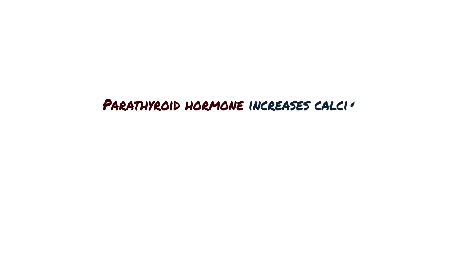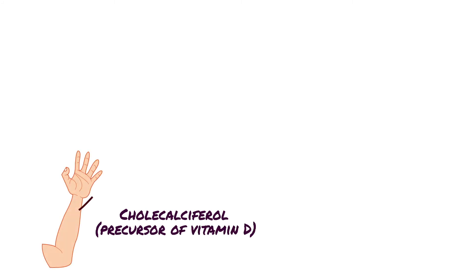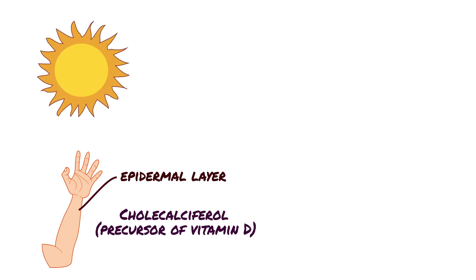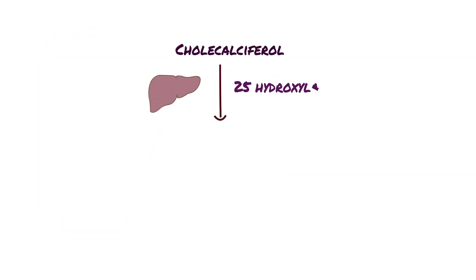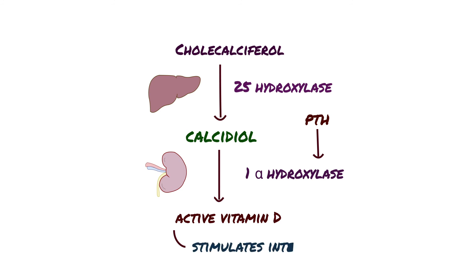Thirdly, parathyroid hormone increases calcium absorption in the small intestine. Parathyroid hormone does not have direct actions on the small intestine, but indirectly stimulates intestinal calcium absorption via activation of vitamin D. Cholecalciferol, the precursor of vitamin D, is synthesized by keratinocyte cells in the epidermal layer of the skin when exposed to sunlight, but can also come from food. Regardless of the source, cholecalciferol travels to the liver, where the enzyme 25-hydroxylase converts it into 25-hydroxycholecalciferol, or calcidiol. Calcidiol then travels to the proximal tubular cells of the kidneys, where parathyroid hormone stimulates renal 1-alpha-hydroxylase — the enzyme that converts 25-hydroxycholecalciferol to 1,25-dihydroxycholecalciferol, or active vitamin D. In turn, active vitamin D stimulates intestinal calcium absorption.